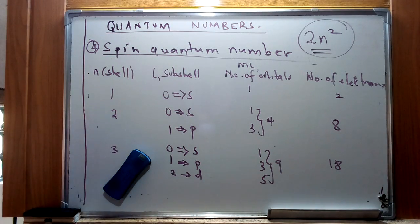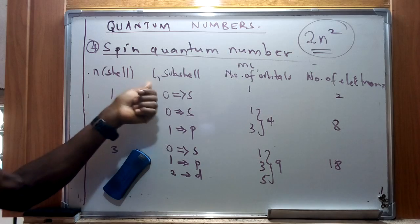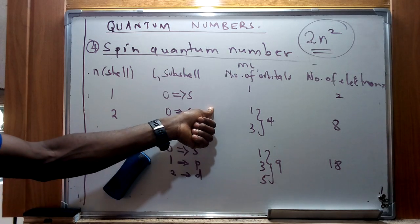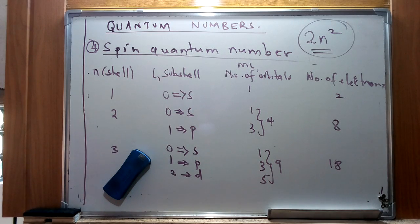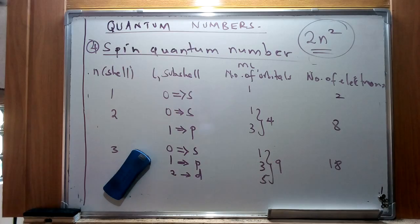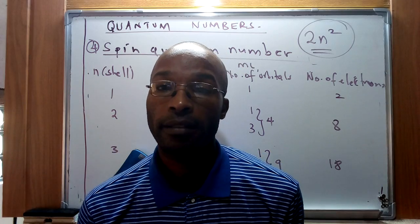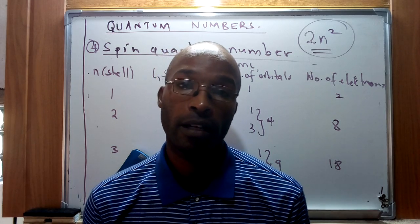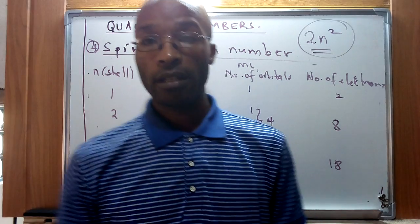Next we're going to look at a few principles and rules which will assist us in designating electronic configuration for various atoms. This will open the way to describe various elements in terms of their electronic configuration and help us understand trends across the periodic table. We'll continue in the next video. God bless you.